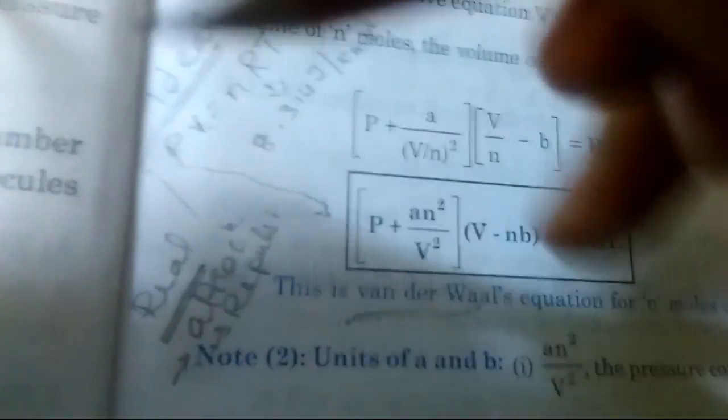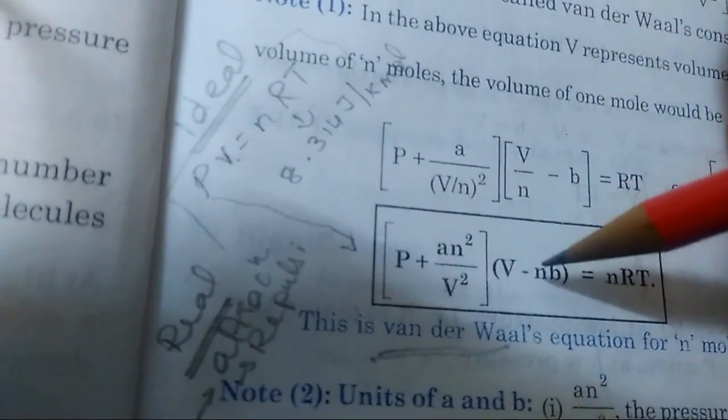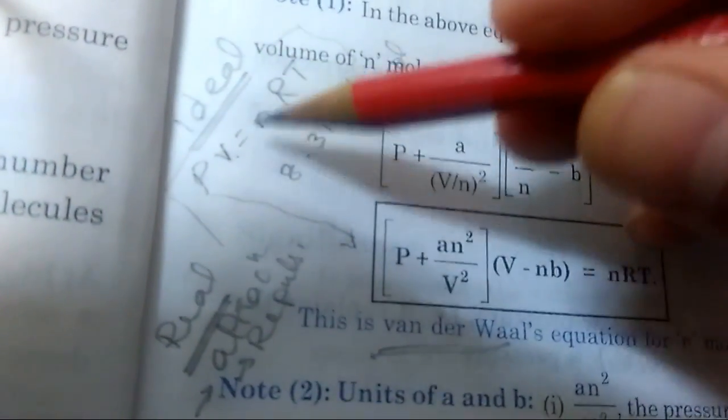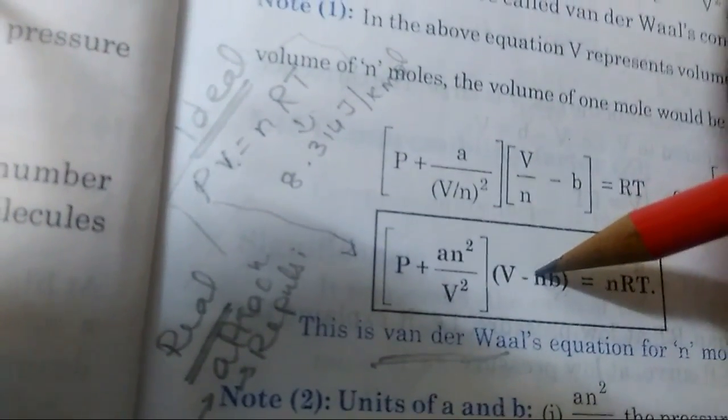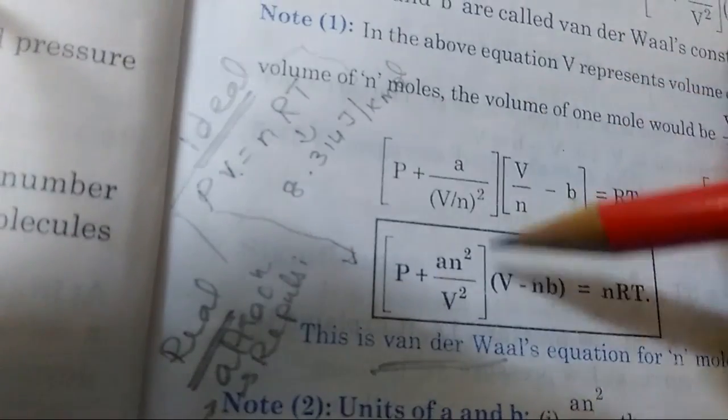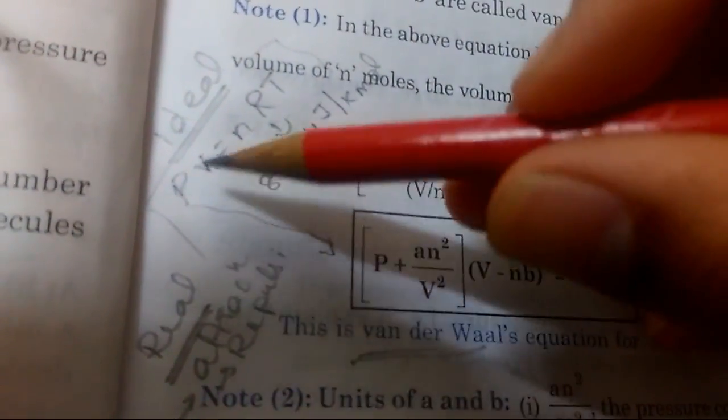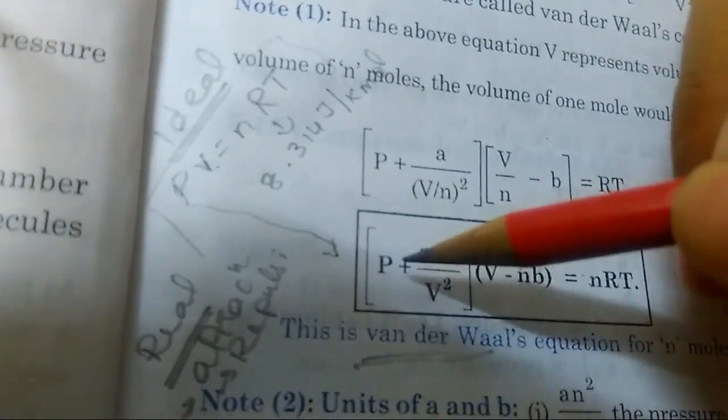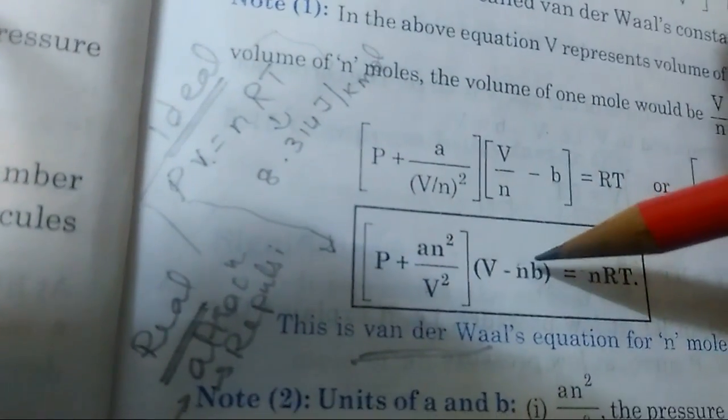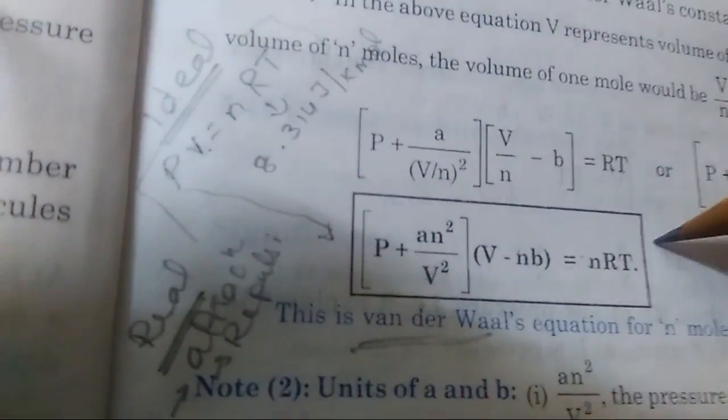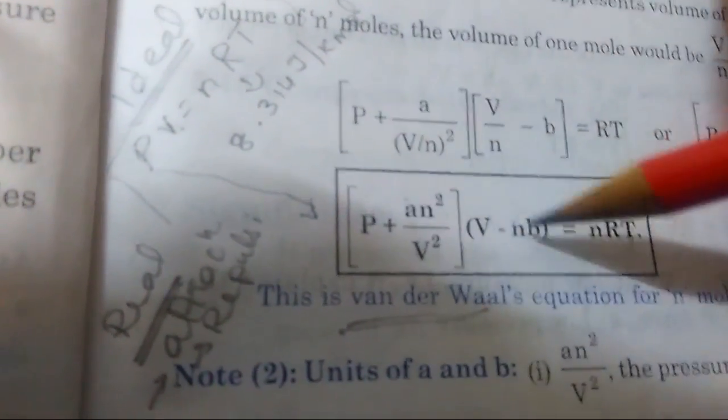Instead of pressure, we're accounting for P plus an²/V². Similarly, for volume, instead of V, we're subtracting nb from it. b I will also explain in a minute. n stands for number of moles. Obviously, your right-hand side still remains the same, which is nRT. So it's (P + an²/V²)(V - nb) = nRT.